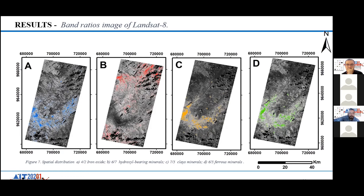To determine the distribution of major alteration zones, the spectral angle mapper classifier was applied. It reveals three different mineral zoning sequences: yellow pixels represent magnesium-rich carbonates mainly in the southwest and east; silicification alteration representing opal in the intermediate argillic phase; and propylitic zones represented as light-colored pixels in the west of the study area.